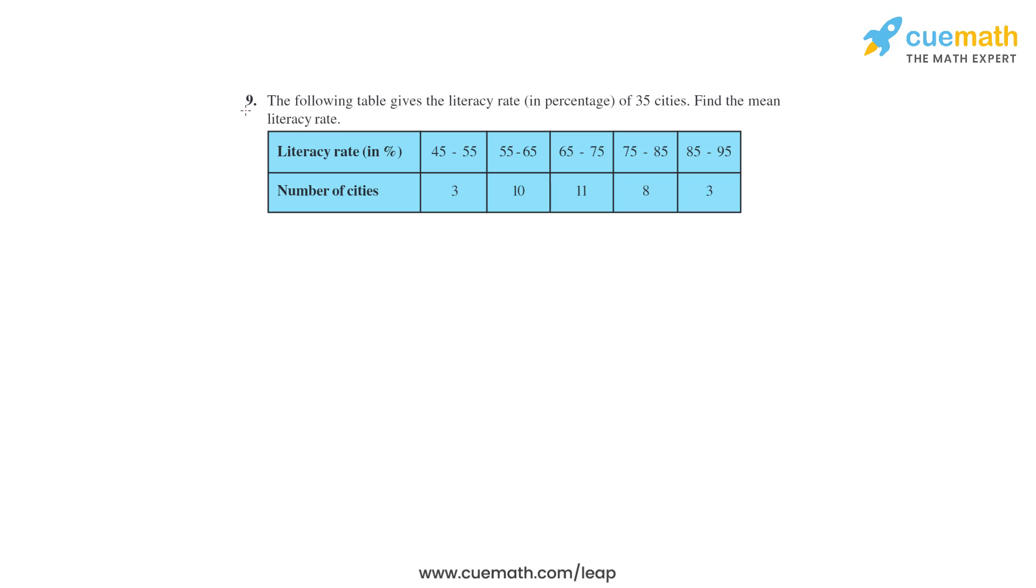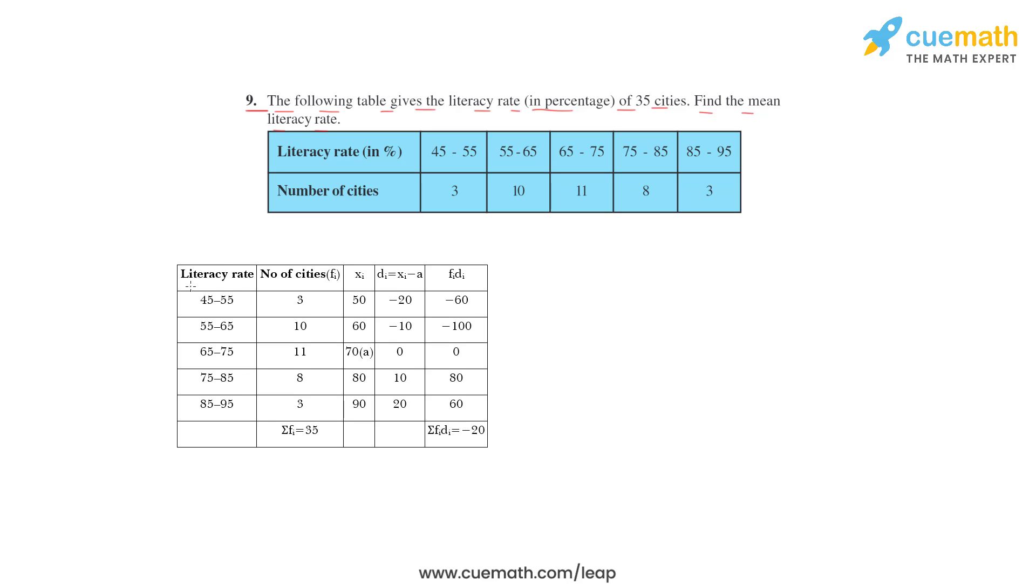The following table gives the literacy rate in percentage of 35 cities. Find the mean literacy rate. Let's make the table. Literacy rate in percent: 45 to 55, three cities; 55 to 65, 10 cities.